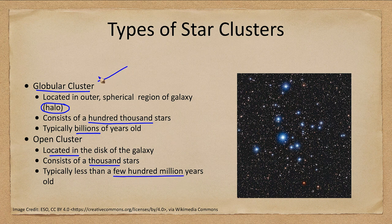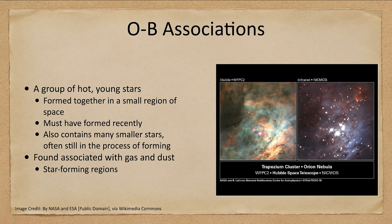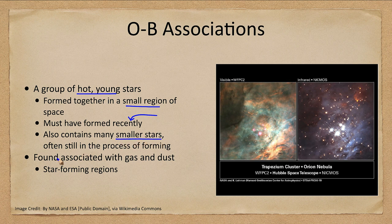Globular clusters are gravitationally bound together and remain together their entire lives. Open clusters are not gravitationally bound and will eventually spread out and disperse throughout the galaxy. Another type we can see is the OB association — groups of very hot young stars that formed together in a very small region of space. They had to form recently because they don't live very long, although they also contain many small lower mass stars still in the process of formation.